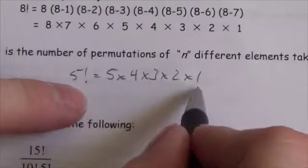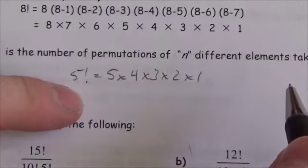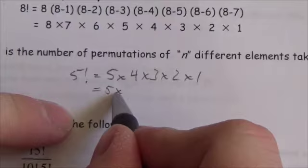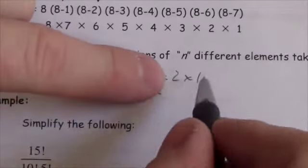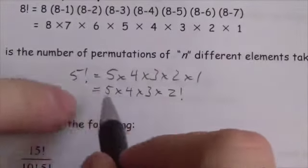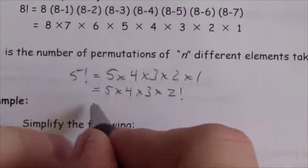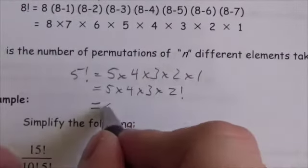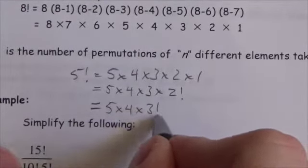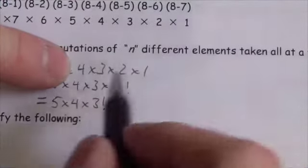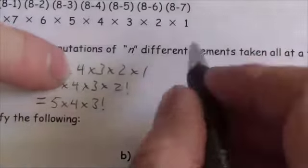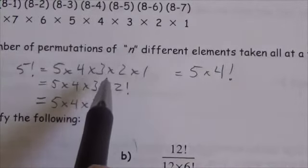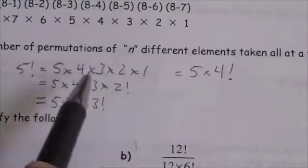Notice that 5 factorial equals 5 times 4 times (2 times 1), where 2 times 1 is 2 factorial. So 5 factorial is the same as 5 times 4 times 3 factorial, or 5 times 4 factorial. Essentially, I can drop the factorial symbol anywhere and it implies all remaining factors down to 1.